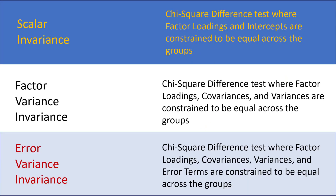The other invariance tests are similar to metric invariance but constrain more parameters. Scalar invariance constrains both factor loadings and intercepts — you can also establish partial scalar invariance if full scalar invariance isn't achievable. Factor variance invariance constrains factor loadings plus covariances and variances across groups. Error variance invariance constrains factor loadings, covariances, variances, and even error terms — which is very difficult to establish non-significance for.